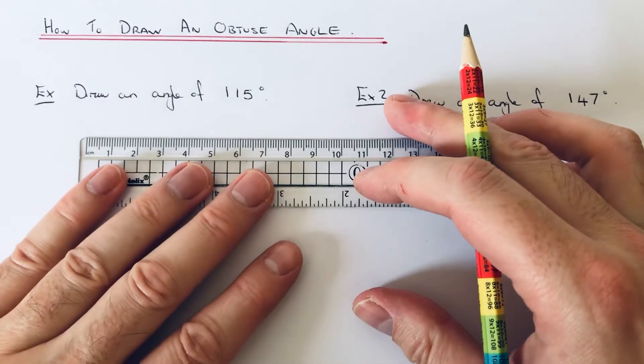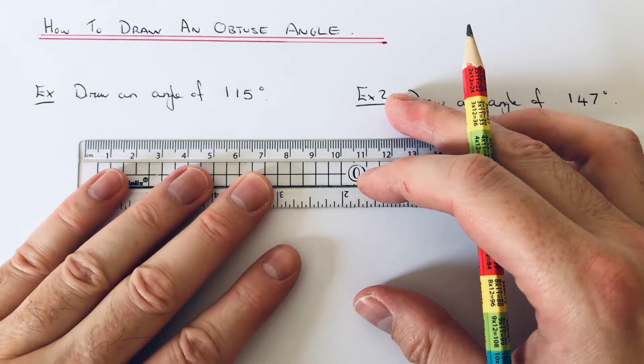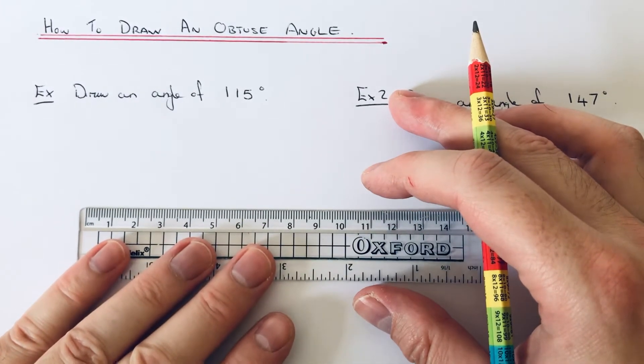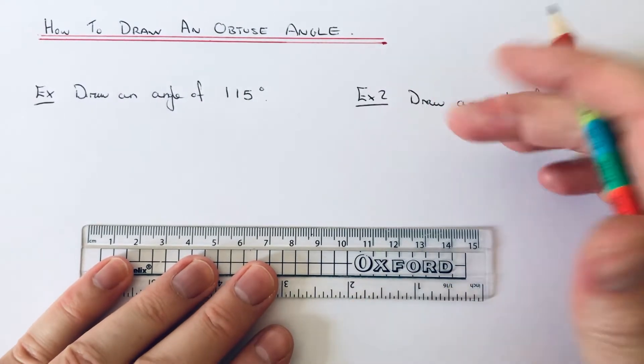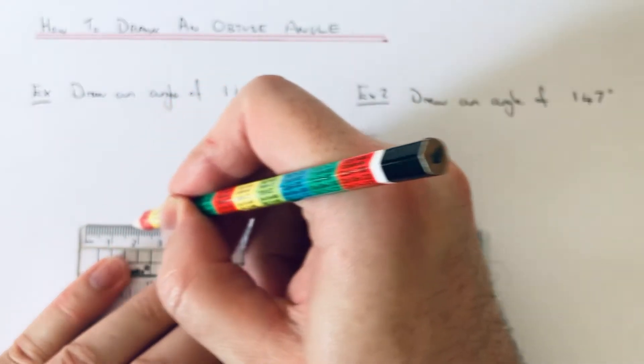Now give yourself plenty of room above the line. No point doing it here because the angle will hit the question. So let's move it about there. So five centimeters long.